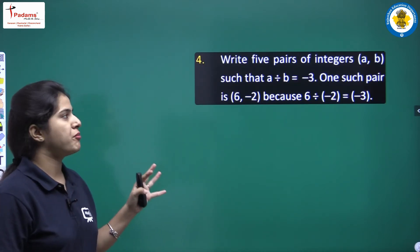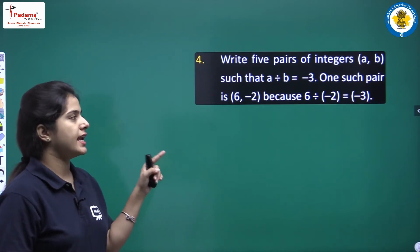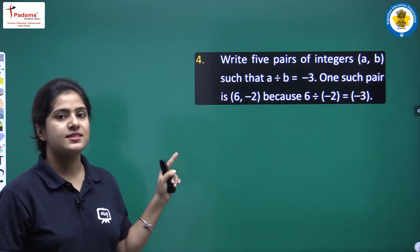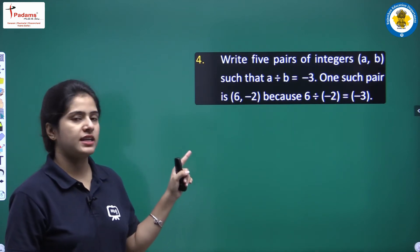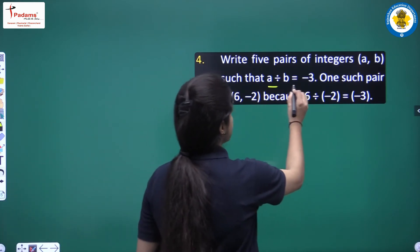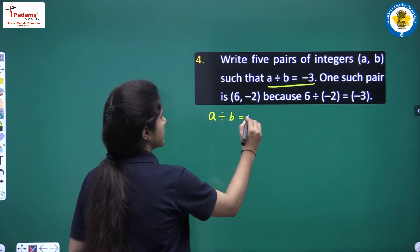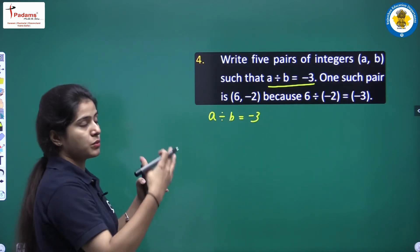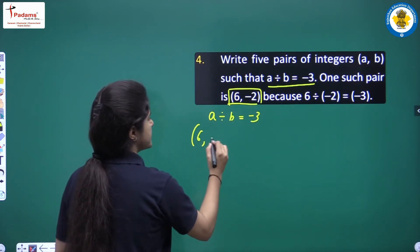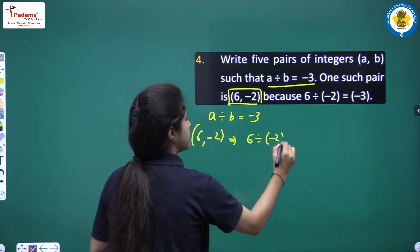Let's start with the fourth question. It says: write five pairs of integers (a, b) such that a divided by b equals minus three. One such pair is (6, -2) because 6 divided by minus 2 equals minus 3. So the operation is a divided by b equals minus 3, and the pair given to us is (6, -2).